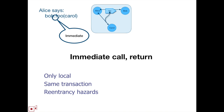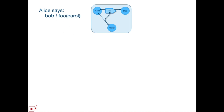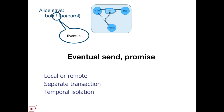The dot notation is the immediate call — call-return semantics, only usable within a VAT. The bang is the eventual send — the asynchronous one — where you're queuing on the queue of wherever Bob is, whether local or remote. Each VAT has an associated incoming message queue. Each queued message is a separate atomic transaction — we call it a turn of the event loop — giving you nice temporal isolation of each separate eventual message.